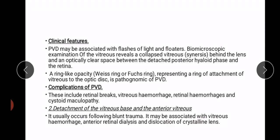Clinical features: flashes of light and floaters are seen. Examination of the vitreous reveals a collapsed vitreous sinus behind the lens and an optically clear space between the detached posterior hyaloid face and the retina. A ring-like opacity — Weiss ring — representing the ring of attachment of vitreous to the optic disc is pathognomonic of PVD.